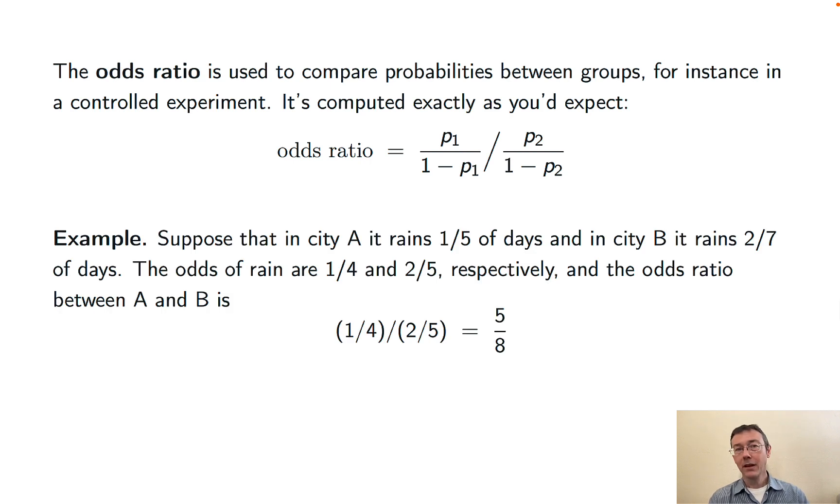Here's a simple example. Suppose that in city A, it rains one-fifth of days, and in city B, it rains two-sevenths of days. So the odds are one-fourth and two-fifths, one-to-four and two-to-five, respectively. For instance, in city A, it's expected to rain one day for every four days it does not. We compute the odds ratio between those two cities just by dividing one-fourth and two-fifths. We do a little simple arithmetic, and we get five-eighths, which is 0.625.